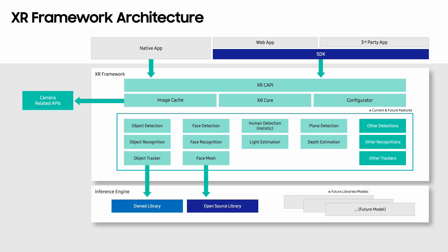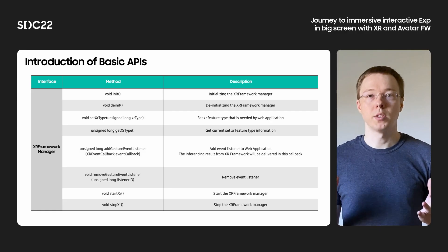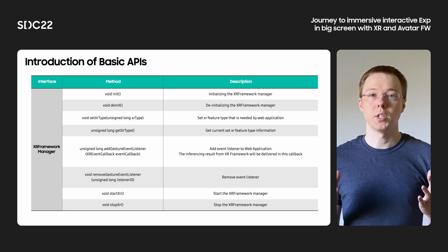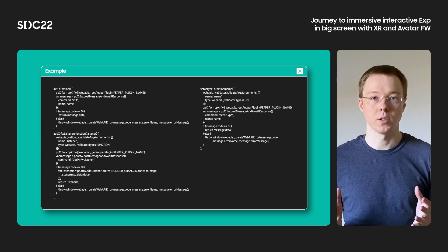To make these features possible, the Framework uses multiple inference engines to process data using AI-based models. These engines are optimized to make the best use of the device's available hardware. Now that we have a high-level understanding of the architecture, we will go over some basics of the API and how it is made available to web applications. Here we've selected some example methods from the API that are related to capturing a user's gestures. These methods help you to start the gesture recognition system, as well as receive gesture events through an event callback. An example of code usage is shown on the screen. To support web applications, a Pepper plugin was created to call the XR Framework from JavaScript. Here we show how those methods are accessed using the Pepper plugin.